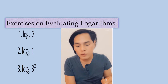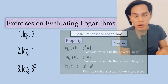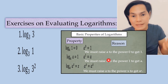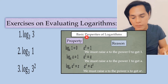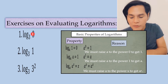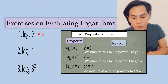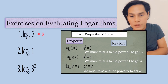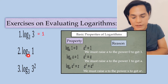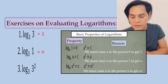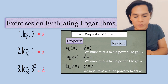Now let's solve some exercises on evaluating logarithms, but first we need the basic properties of logarithms — please register these in your long-term memory. Number one: the log of 3 to the base 3 is equal to 1 — look at the second property. Number two: the log of 1 to the base 3 is equal to 0 — look at the first property. And last: the log of 3 squared to the base 3 is equal to 2 — look at the third property.